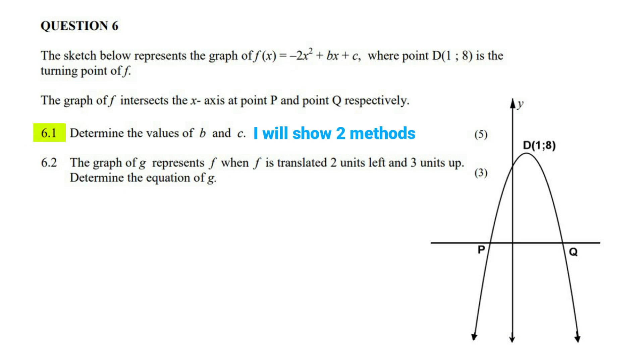One of the ways we could handle this is we know that to find the x value of a turning point, when it's written like this, you use the formula x equals minus b over 2a.